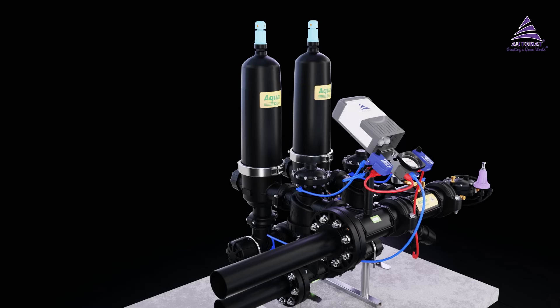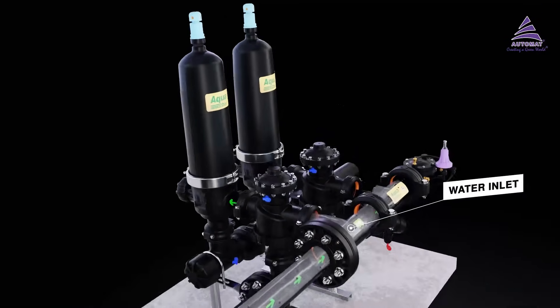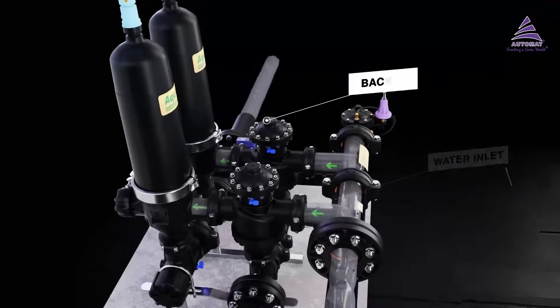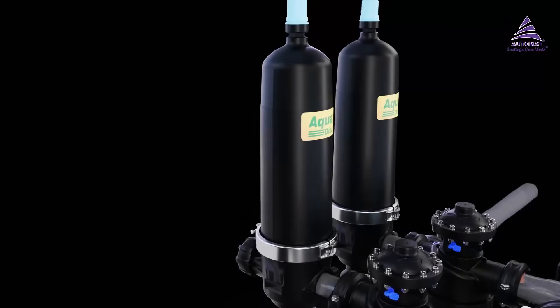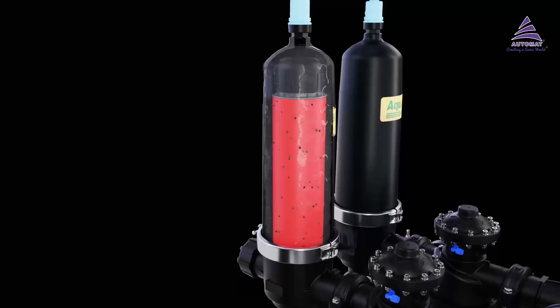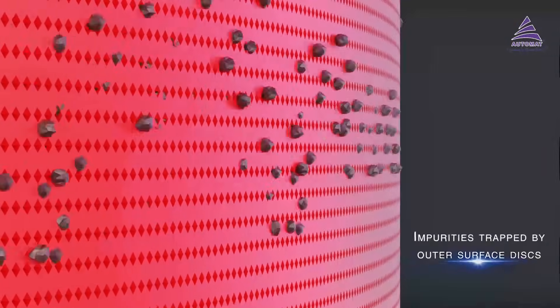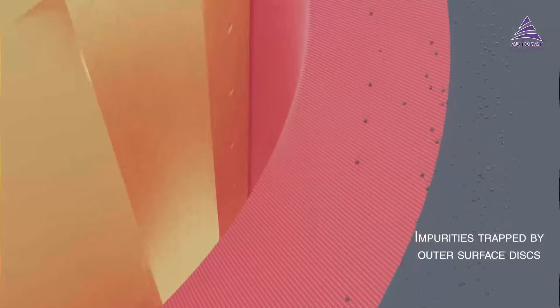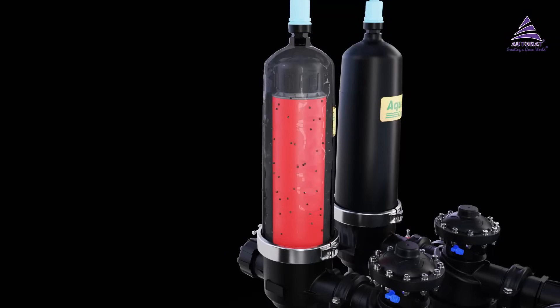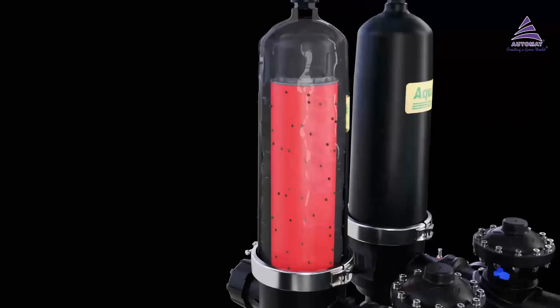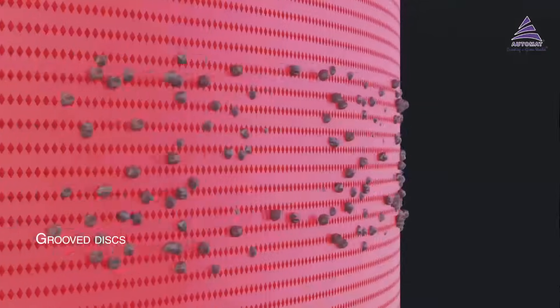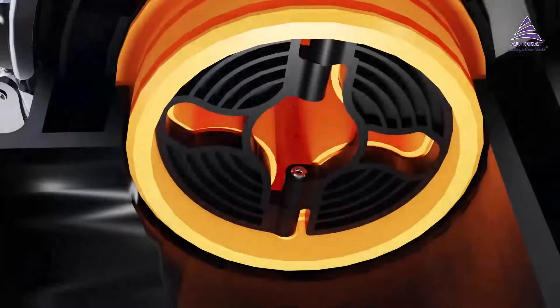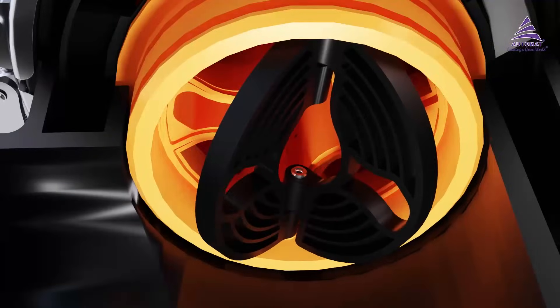The filtration process initiates when water enters through the inlet manifold and reaches the filter after passing through the backflush valve. The water moves through the side area of the disks, thus trapping the impurities onto the outer surface of the disks. Water flows from the outer area of the filter and enters the inner area through the grouped disks, completing the filtration process.